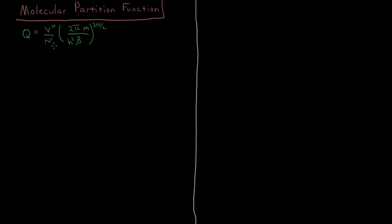The first thing we're going to do is try to understand how we go from a single particle to a collection of n indistinguishable particles in a partition function like this. So if we have some function, let's call it little q, and that'll be a function of volume and temperature, because there's only one particle. This will be the partition function of a single particle, and for now we're just going to leave the form of q unspecified.